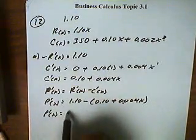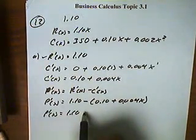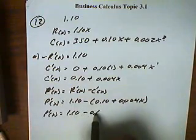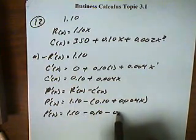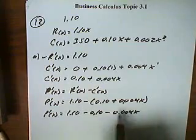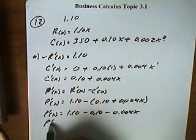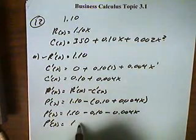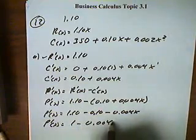And so when I simplify this, I'll get $1.10 right here. This will be negative 0.10 and negative 0.004x. And I combine these two, and I get a marginal profit of 1 minus 0.004x.